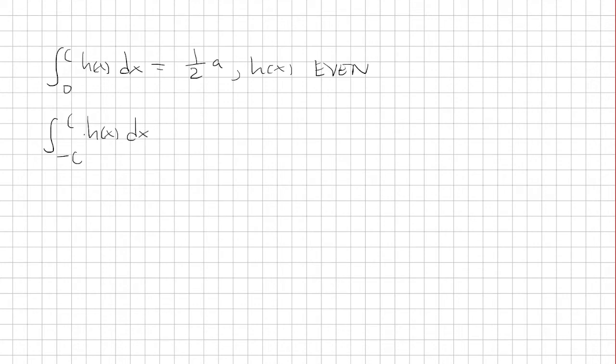Well, first note, because this is even, we can rewrite it as twice the integral from 0 to c of h of x dx. Now, the integral from 0 to c is 1 half times a. The 2s are going to cancel, and we're just left with a.